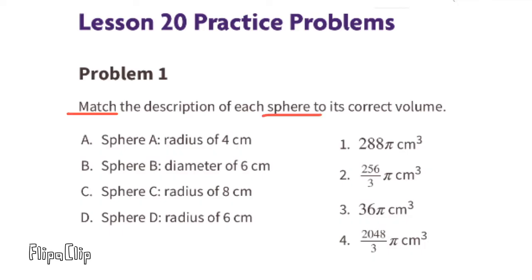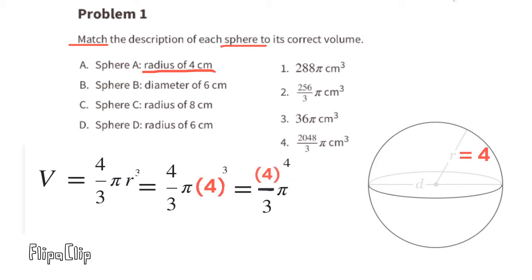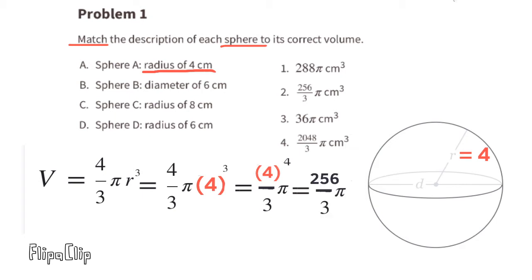Problem number one: match the description of each sphere to its correct volume. Sphere A has a radius of 4 centimeters. We substitute R with 4 and rewrite it as 4 to the 4th power over 3 times pi. Since 4 to the 4th power equals 256, we can rewrite it as 256 over 3 times pi.